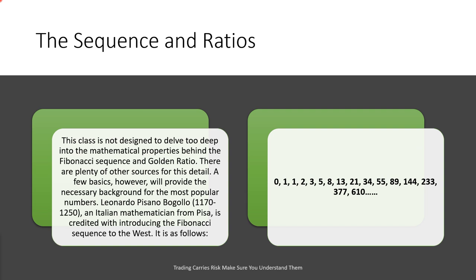The Fibonacci sequence is very easy — you could calculate it all yourself. There are no real calculations. It starts out with a 0, then we add a 1. Somebody once told me it came from watching bunny rabbits multiply. You start out with 0 bunny rabbits, add 1, stay with 1. Add another 1 and you have 2. Those 2 produce 3. When you add 2 and 3 you have 5. Those 5 produce 8. And 8 plus those original 5 gives you 13. It's simply adding the previous number to the current number to give you the next number, and it goes on forever.